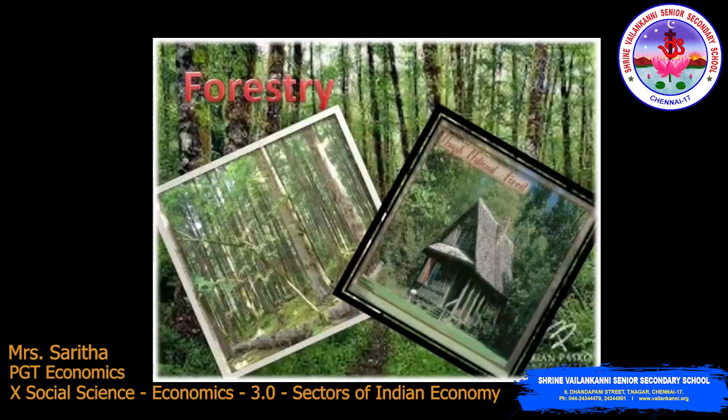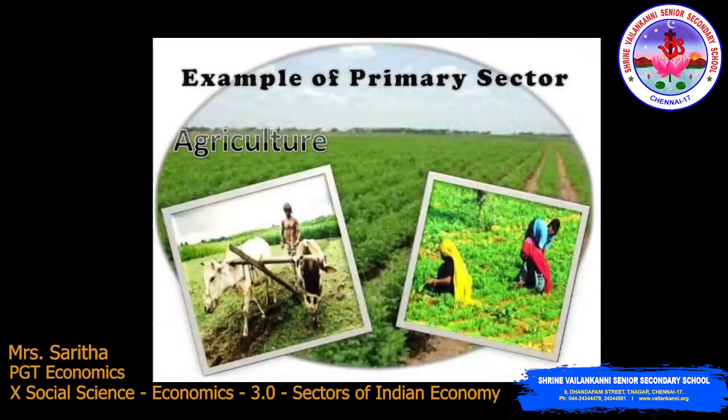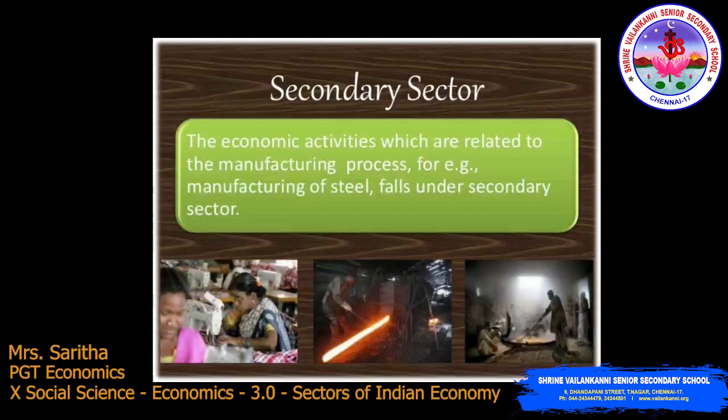Examples of the primary sector include forestry, fishing, and agriculture. Now, the secondary sector is otherwise called the manufacturing sector or industrial sector. By looking at the picture, you can see that economic activities related to the manufacturing process — for example, manufacturing of steel — fall under the secondary sector.